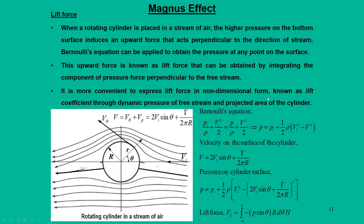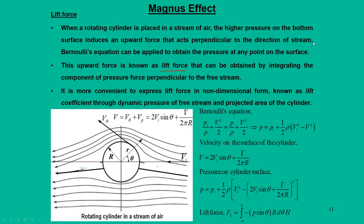The net result is that velocity is higher on the top and lower on the bottom of the cylinder. By Bernoulli's principle, pressure is lower on top and higher on the bottom. This pressure difference across the cylinder creates an upward force — the lift force — acting perpendicular to the stream direction. This is the core conclusion of the Magnus effect analysis: a rotating cylinder in an airstream generates a lift force due to asymmetric pressure distribution.